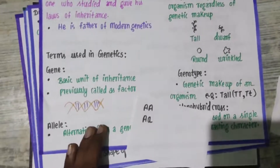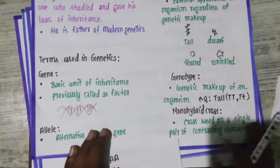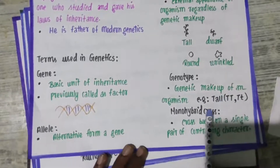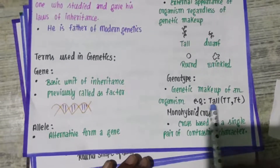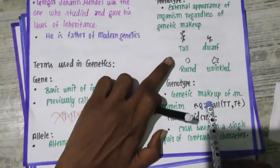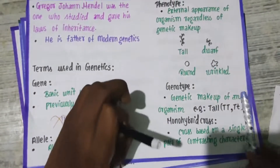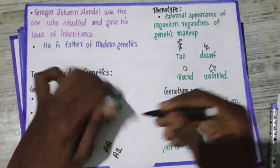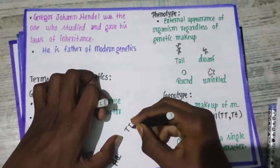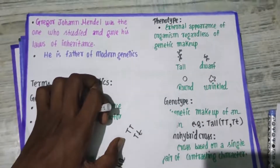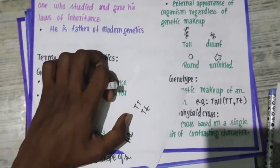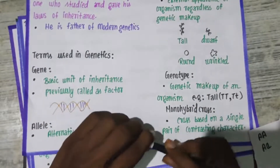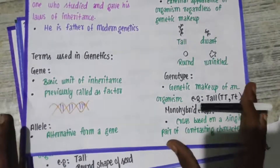Next, let's talk about genotype. Genotype refers to the genetic makeup of an organism. For example, a tall plant can be described genetically as homozygous dominant (TT) or heterozygous (Tt). That genetic description is what we call the genotype.